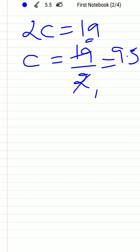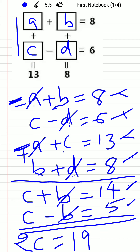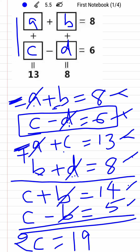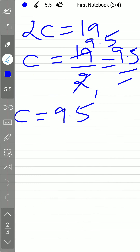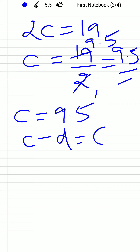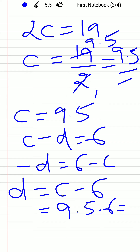Since 2c = 19, c = 9.5. Now substitute c into equation 2: c − d = 6. We know c = 9.5, so 9.5 − d = 6, which gives d = 9.5 − 6 = 3.5. So d equals 3.5.